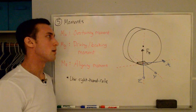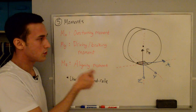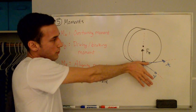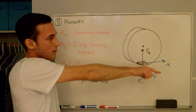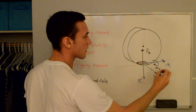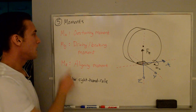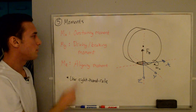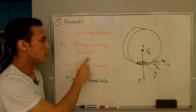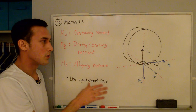For completion, let's talk about moments. We use the right-hand rule: point your thumb in the direction of the axis and curl your fingers — that gives the positive moment direction. M sub X is the overturning moment, which you can think of as the tire falling over. M sub Y is the driving or braking moment. And M sub Z is the aligning moment. Sometimes you'll see these referred to as driving or braking torque, or aligning torque.